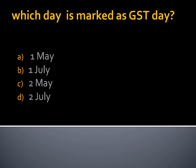The first question: Which day is marked as GST day? Option A, 1st of May. Option B, 1st of July. Option C, 2nd of May. Option D, 2nd of July. Our answer is 1st of July. 1st of July is marked as GST day.